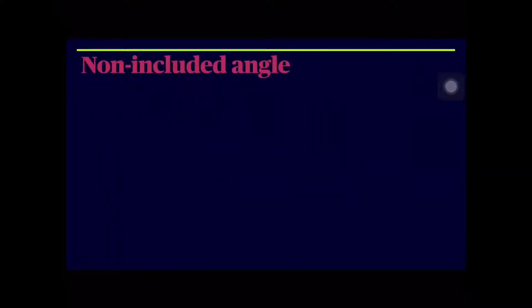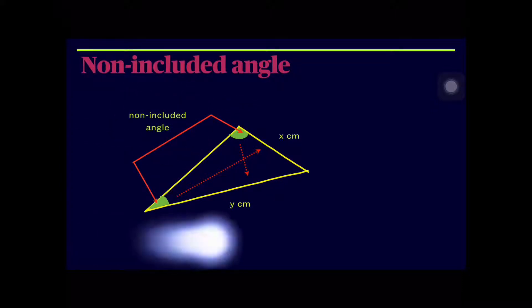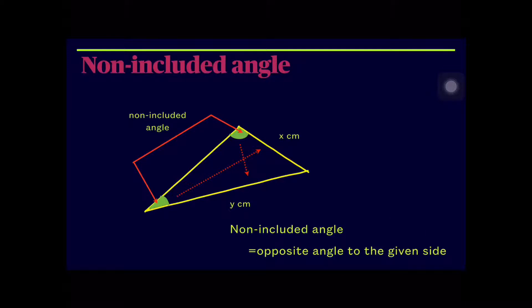What is a non-included angle? The non-included angle is the angle highlighted in green. When given the length of side x and the length of side y, the non-included angle is the one highlighted in green — it means the angle opposite to the given side.